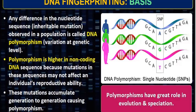If there is a mutation in genes, then it is significant and makes sense. But if there is a mutation in a non-coding region, it is a nonsense mutation. However, that mutation still plays a role in polymorphism. Polymorphisms have a great role in evolution and speciation. These mutations accumulate generation to generation, causing polymorphisms.